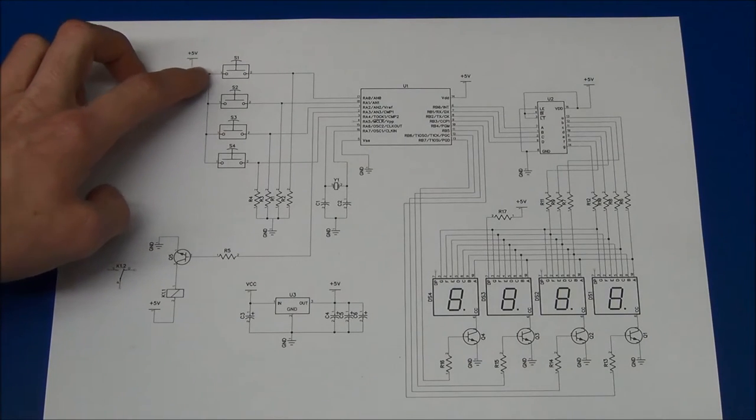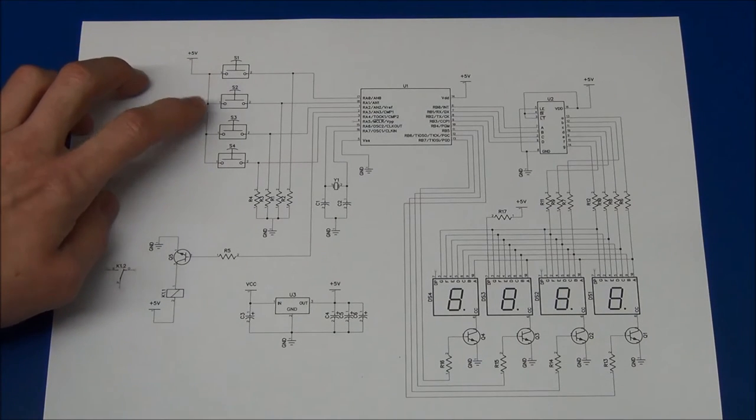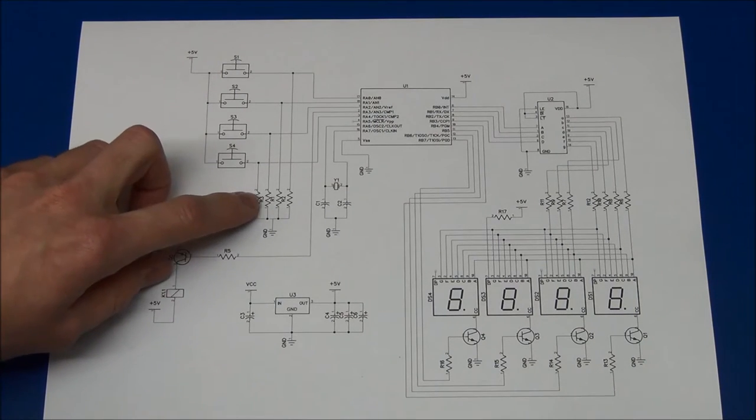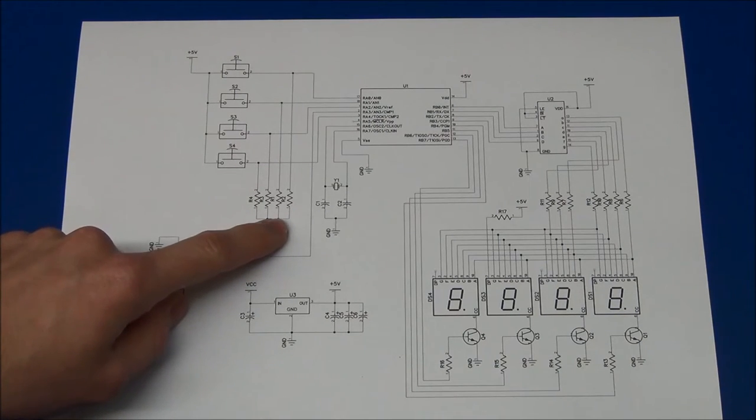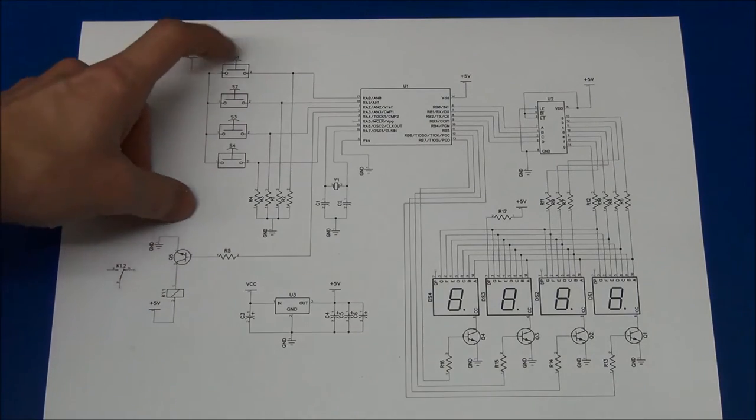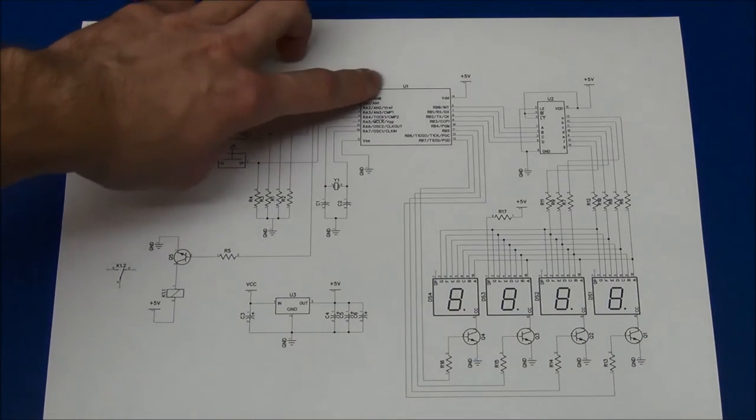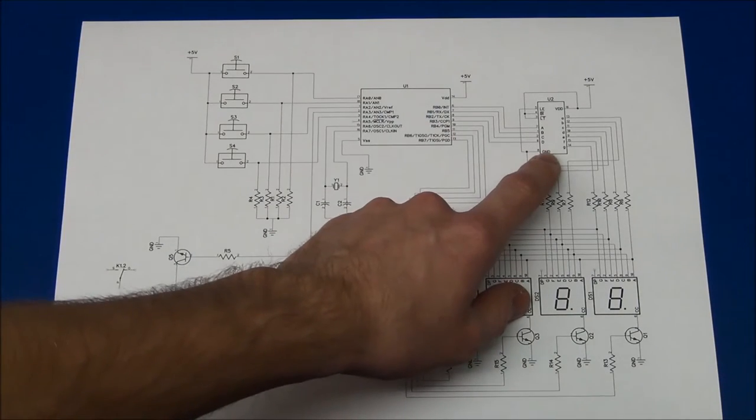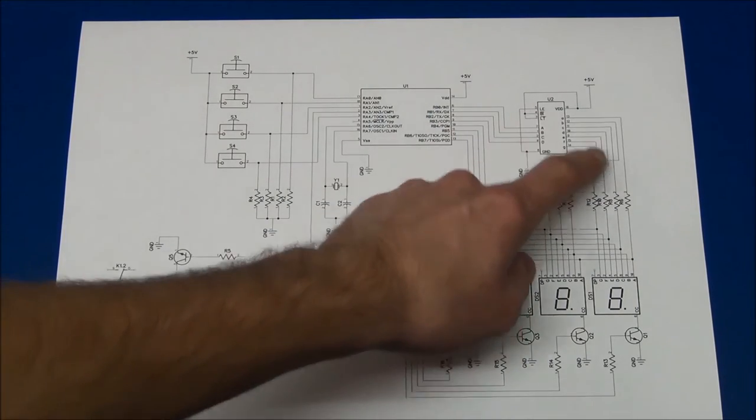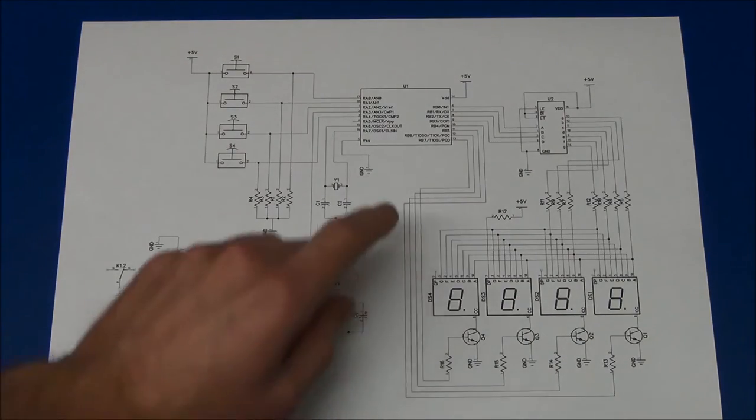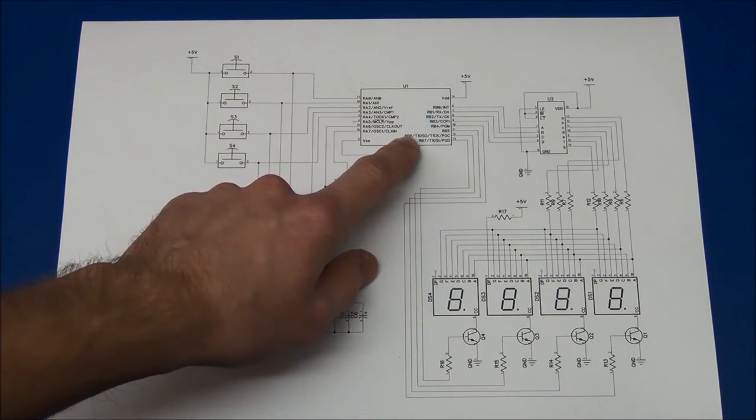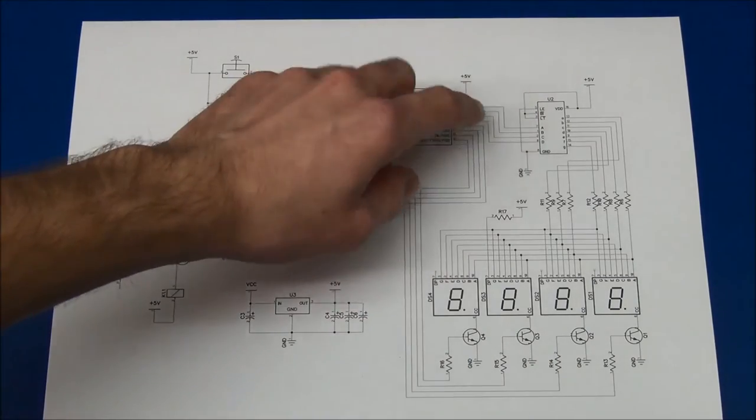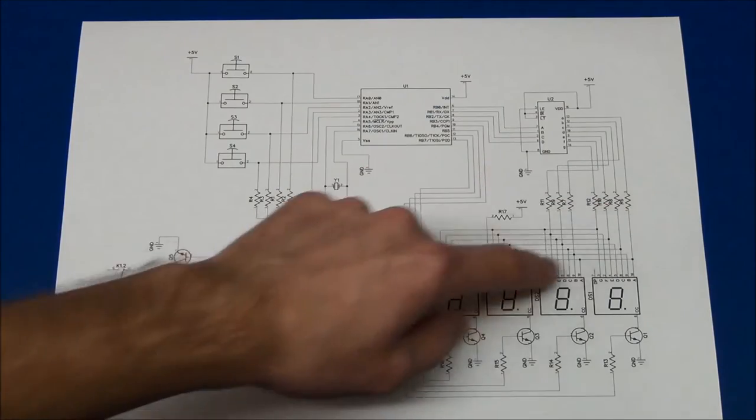So I have a mode button, a digit select button, and a plus and a minus. And these are held to ground with some pull down resistors. And they will go high when a button is pressed, and that's fed into the microcontroller. And that is driving the display driver, and that goes off to the displays. And the microcontroller also handles the multiplexing of the displays, so we only need one driver, and that's basically driving all the displays.